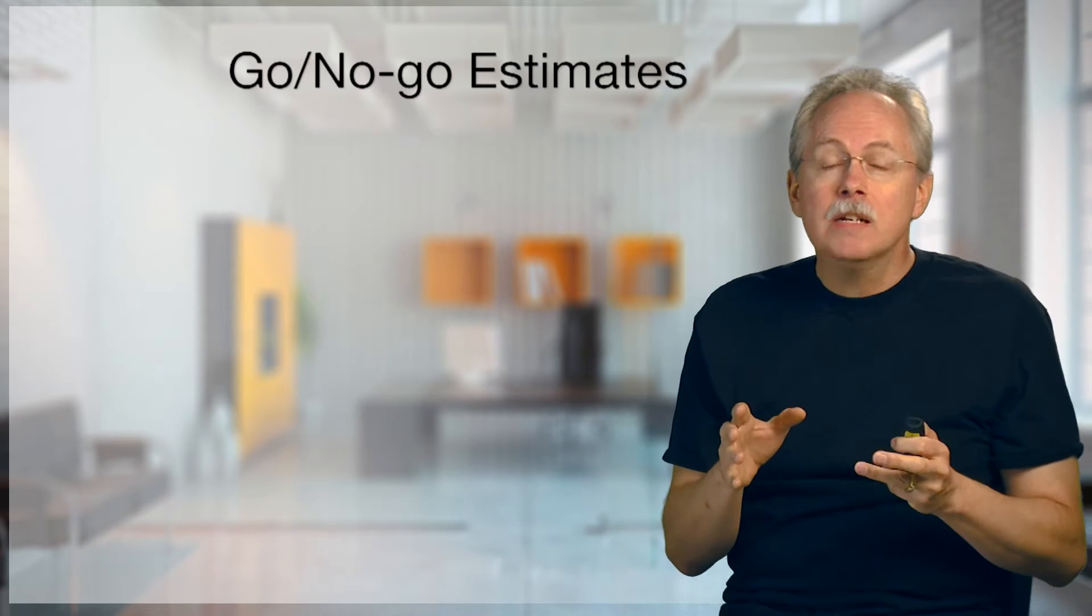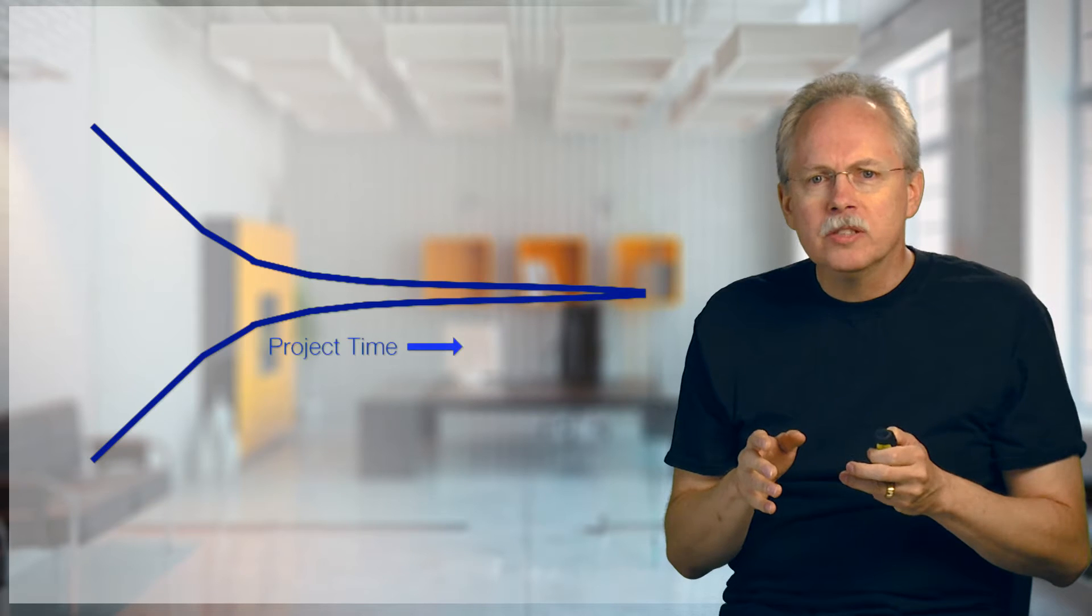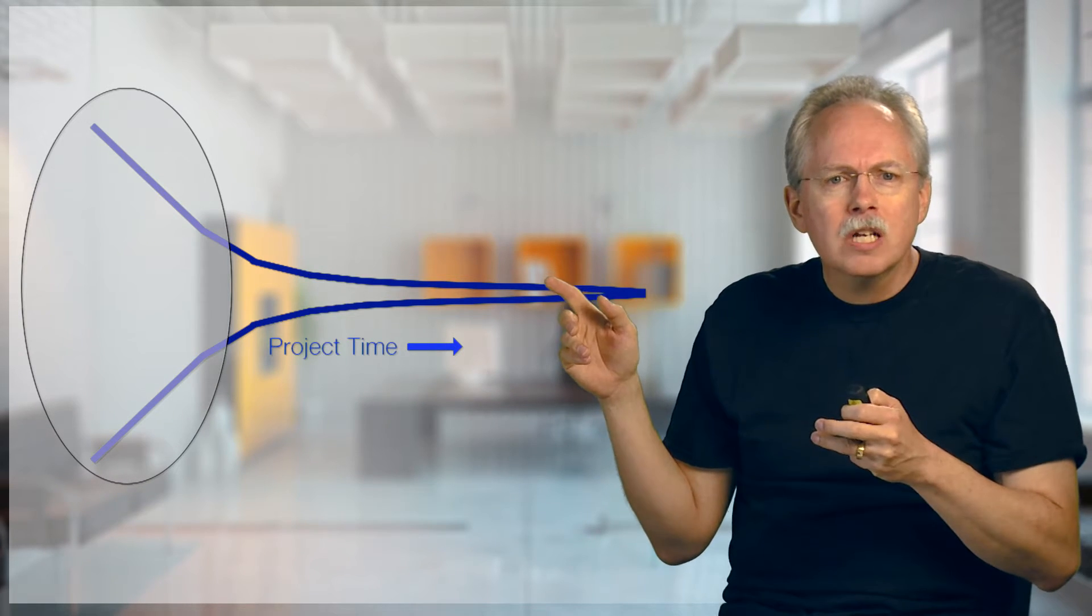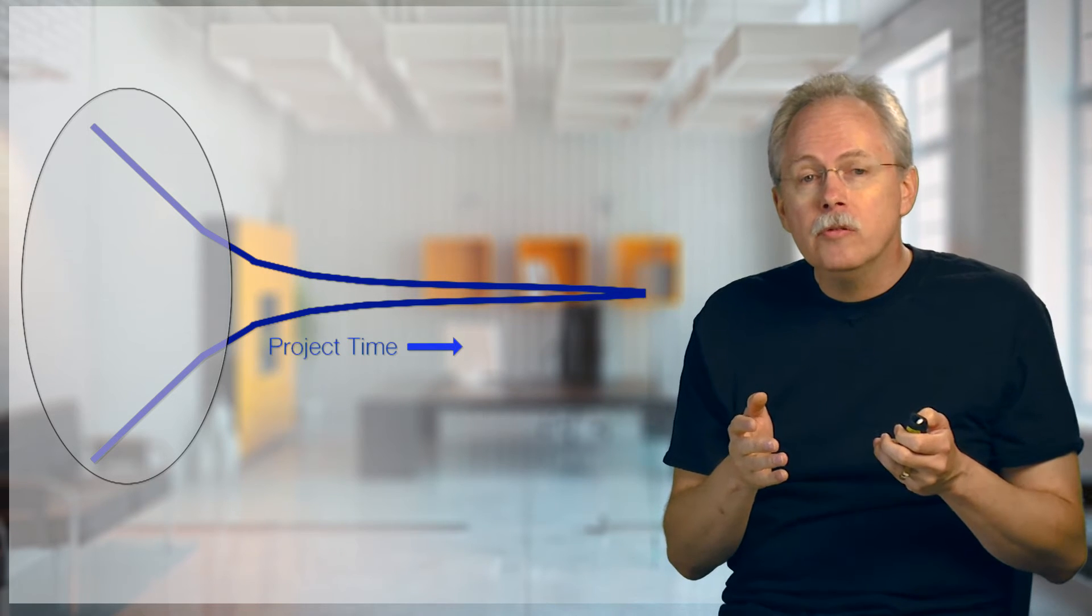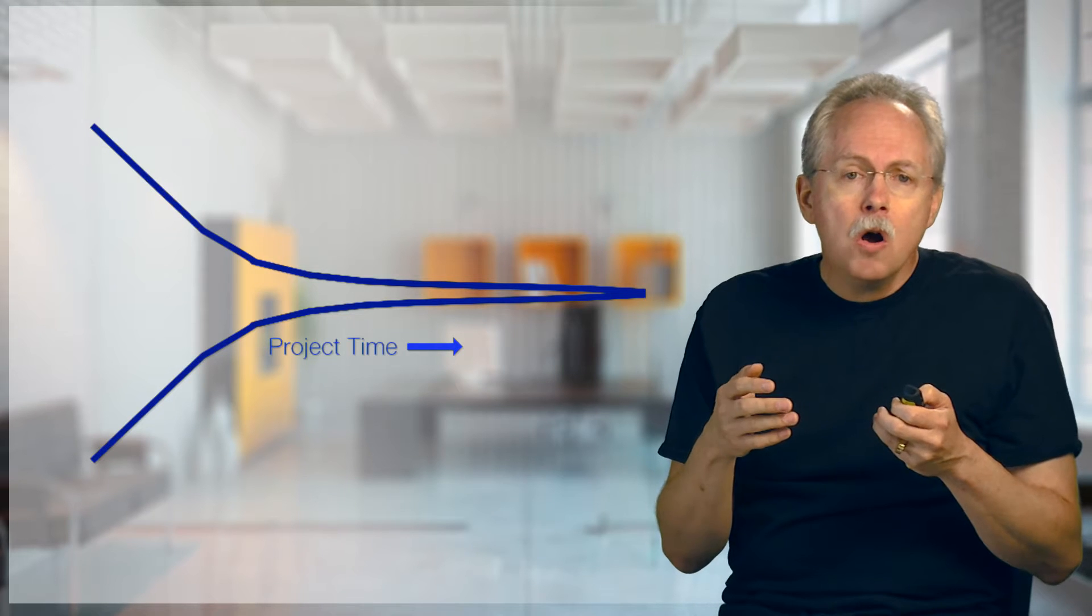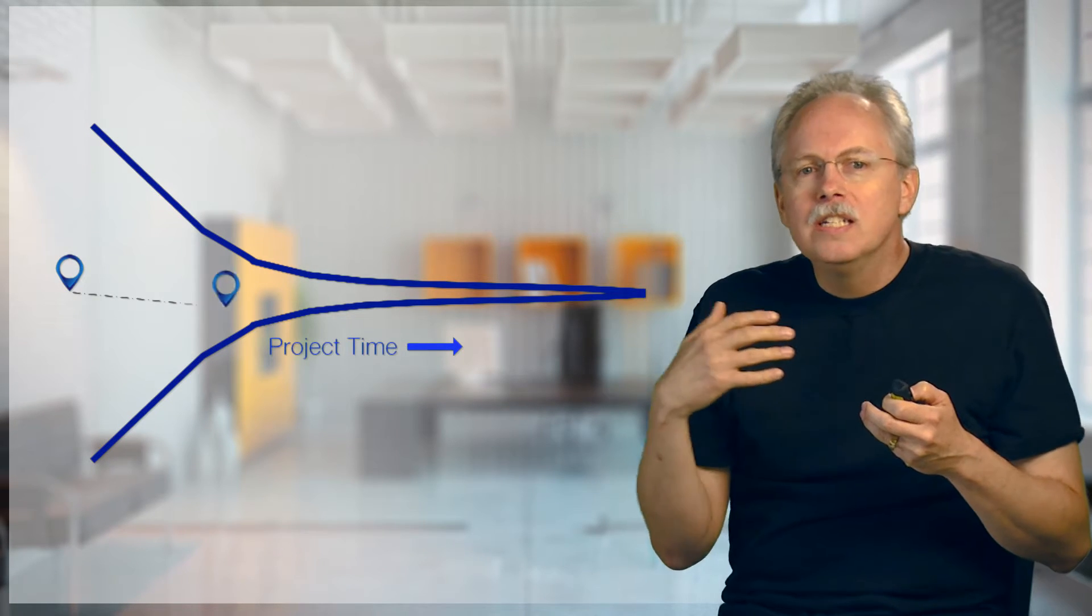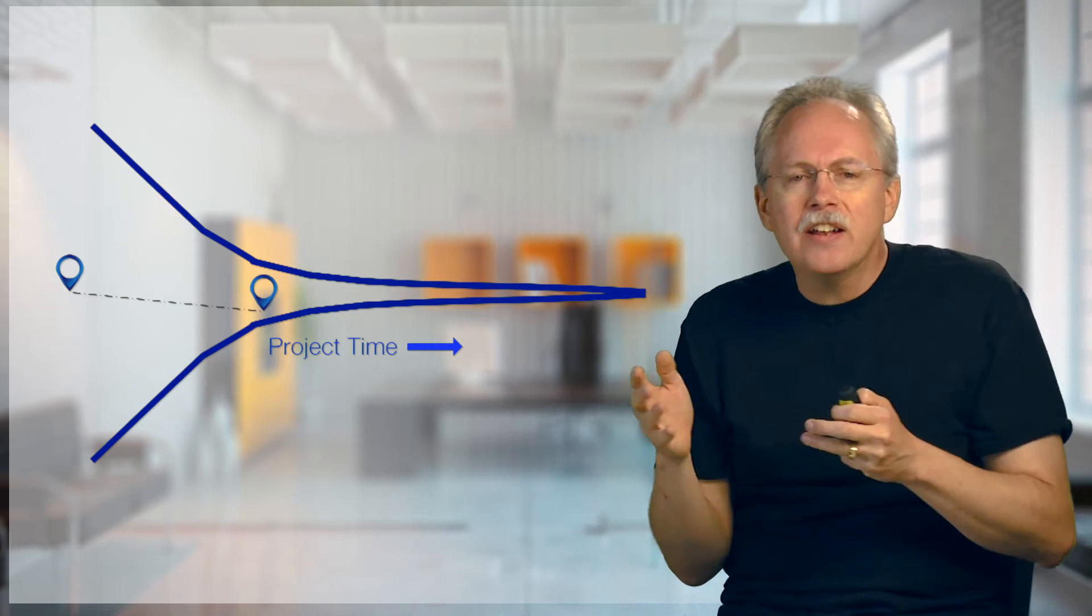Another kind of estimate we need to make is go-no-go estimates. Go-no-go estimates are really handy. We're in the cone and we're way out there in that early part where we know we can't make any kind of good promise. But what we can do is we can say, you know what, I think we're right about here. How much is it going to take to get to here? That's the kind of thing. Is it worth proceeding on to that other point?